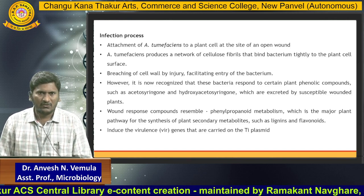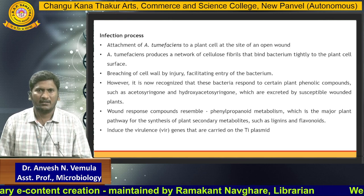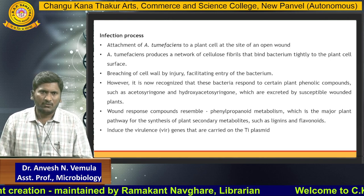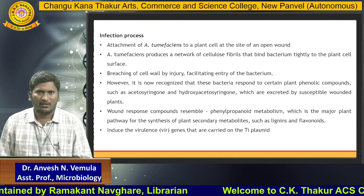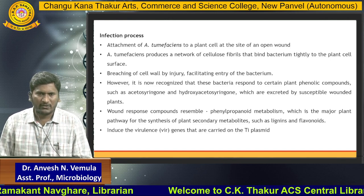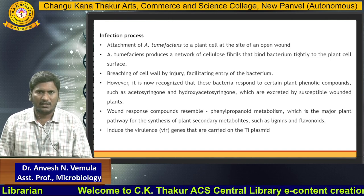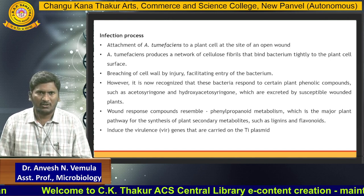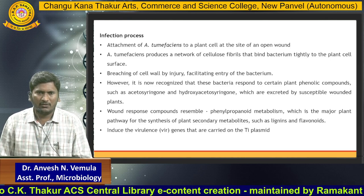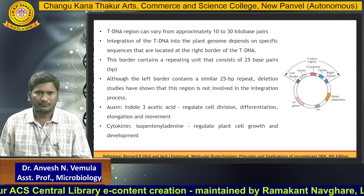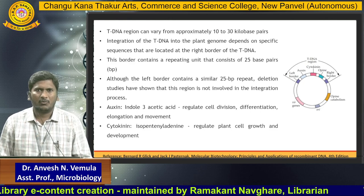Two chemical components — acetosyringone and hydroxyacetosyringone — are secreted by susceptible wounded plants and help in attracting Agrobacterium tumefaciens towards the injured plants. On the basis of these two components, the bacterium migrates toward the injured plant. These molecules are synthesized by wound plants and resemble components of phenylpropanoid metabolism, and they have the capacity to induce virulence.